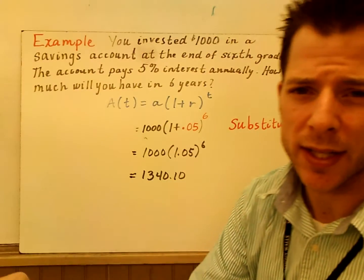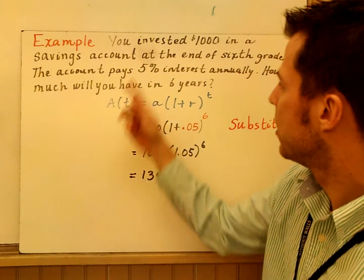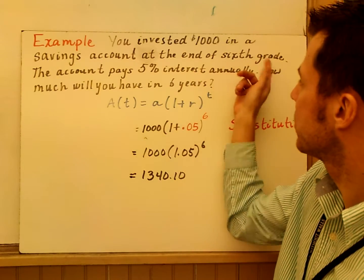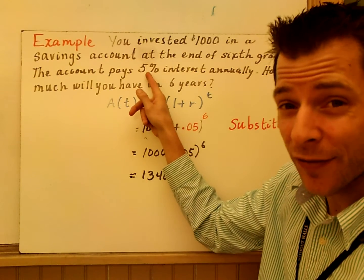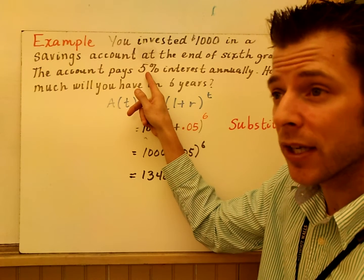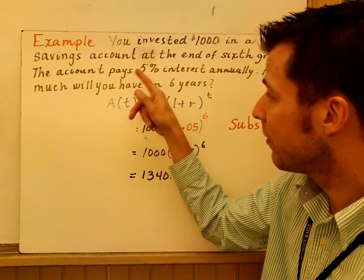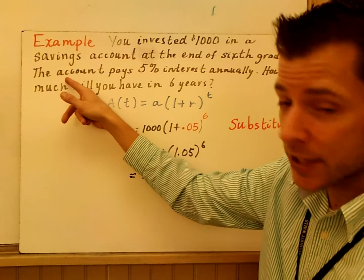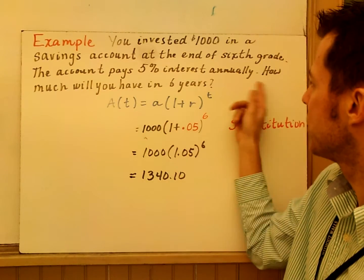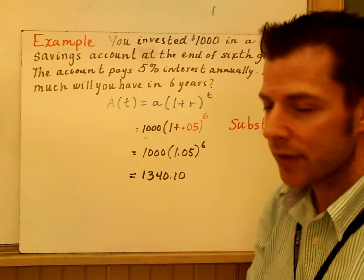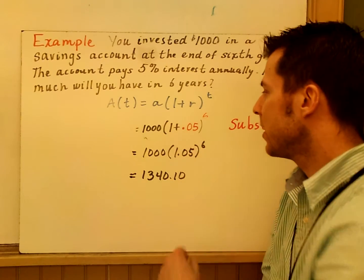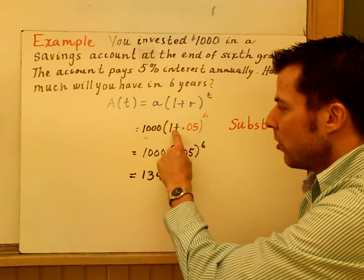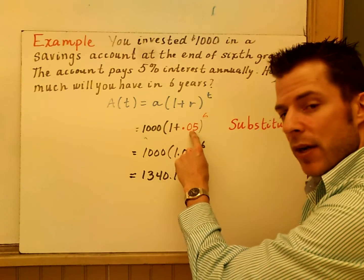And it's actually related to that college problem we just did, if you invest some money. So, if you invest $1,000 in your savings account at the end of sixth grade, the account pays 5%. And if you can find 5% nowadays, that would be extremely great. I don't even think now you can make 1% on your savings, or it's like a tenth of a percent. They're terrible now. But in this account, you make 5% interest annually. How much will you have after six years? So, I set up my equation, and I just substitute. I have 1,000. That's my initial amount. 1 plus .05. There's my rate as a decimal.